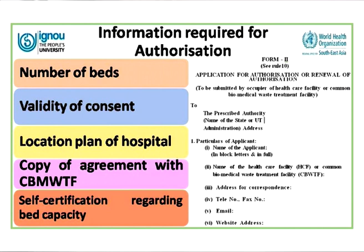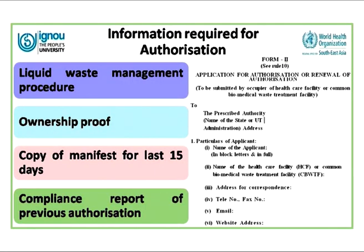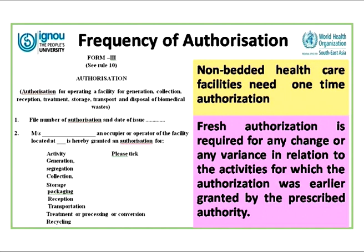Information required for Form 2 authorization includes the number of beds, validity of consent, location plan of the hospital, copy of the agreement for transportation of waste to the central biomedical waste management and treatment facility, self-certification with bed count, liquid waste management procedure, ownership proof of the institution, and the copy of the manifest for the last 15 days along with a compliance report of the previous authorization if available.